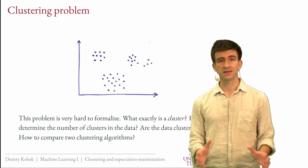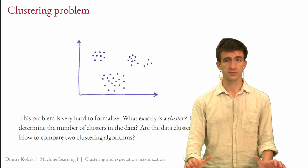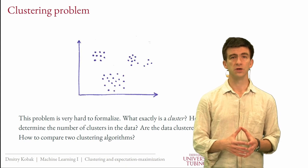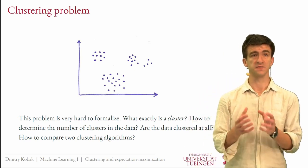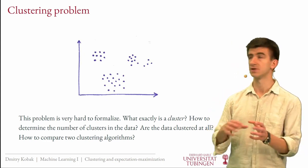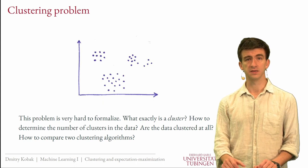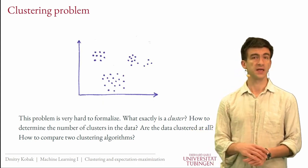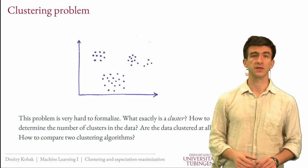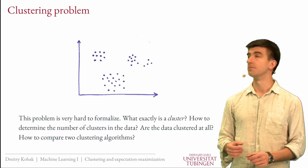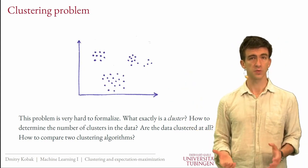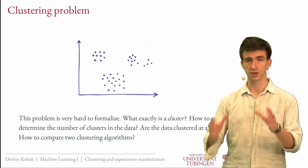It turns out the clustering problem is actually very difficult, and the problem starts with even formalizing it. What does it mean to cluster data? What is the definition of a cluster? It's very hard to say what captures our human intuition about what a cluster is. Even people might disagree about whether something is one cluster or two clusters. Many questions arise: how many clusters are in the data? Is it three or four, or perhaps just one blob with no clustering at all?